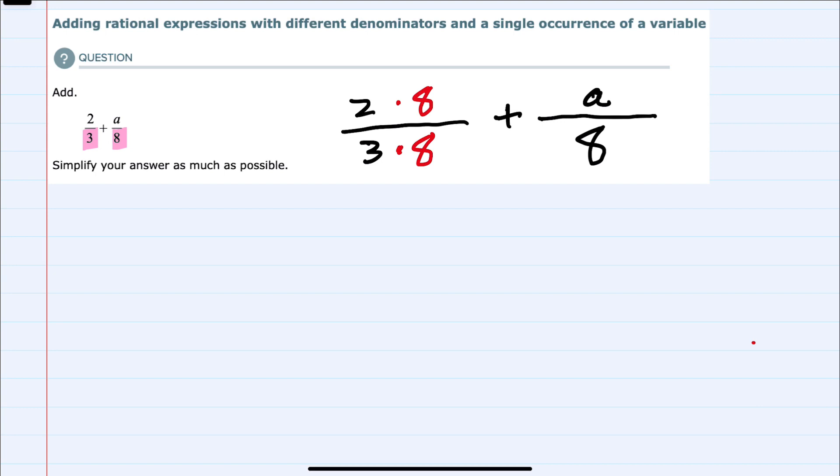On the right hand side I would need to multiply by 3 and again I can multiply the denominator by 3 as long as I multiply the numerator by 3.